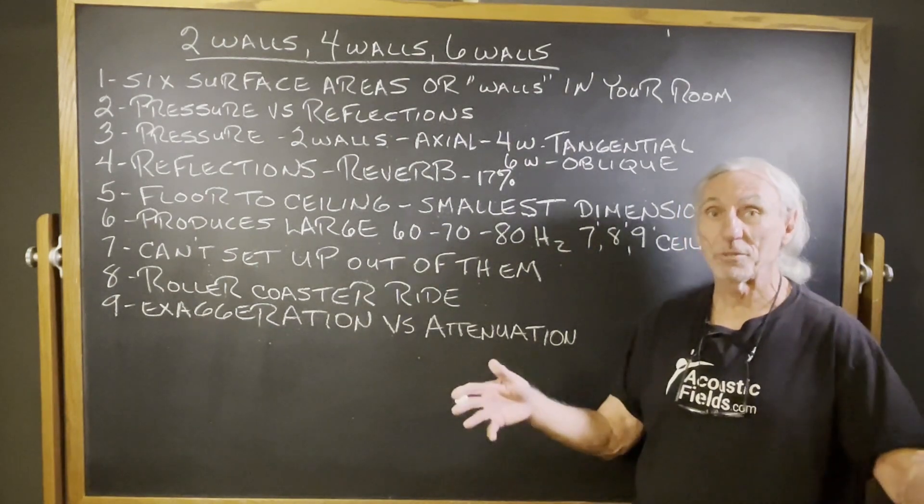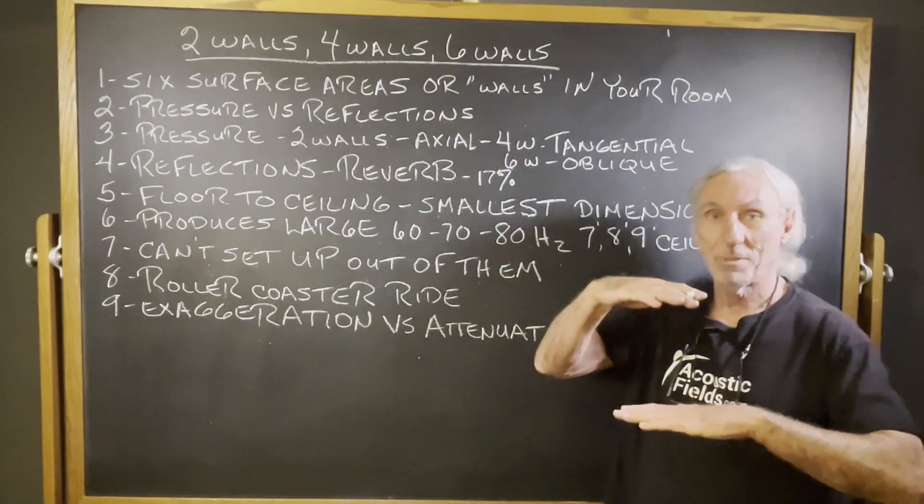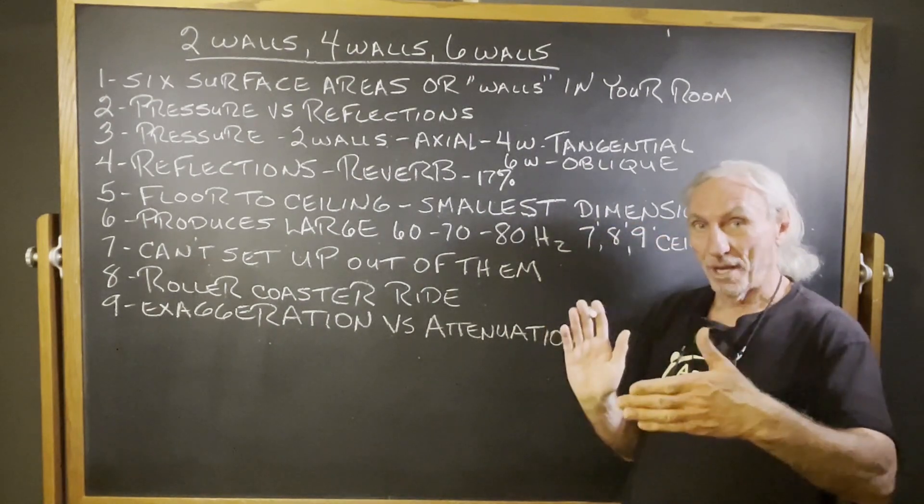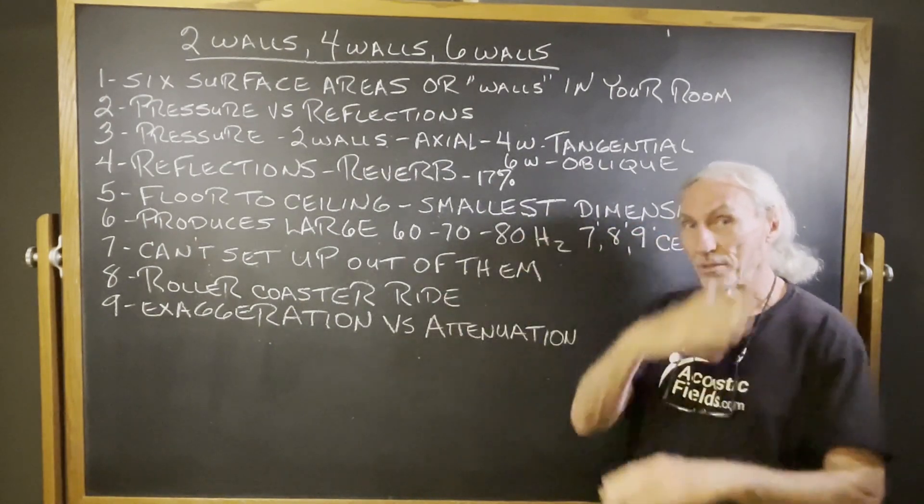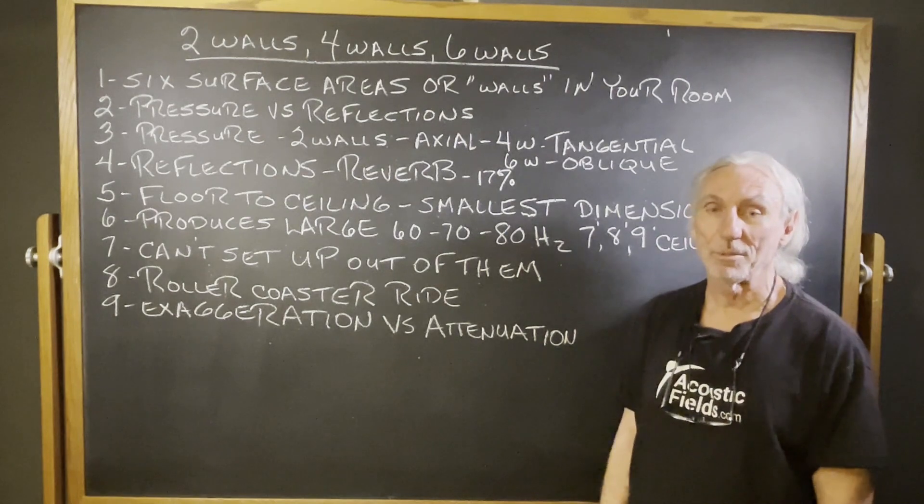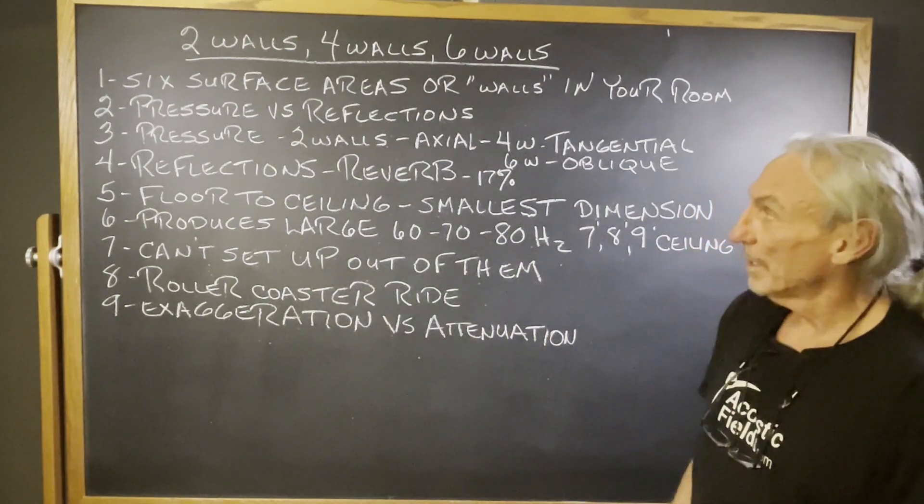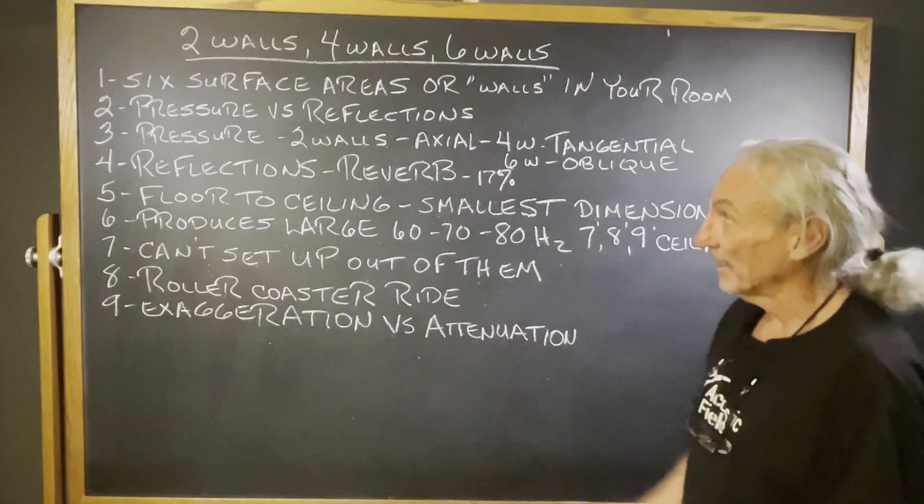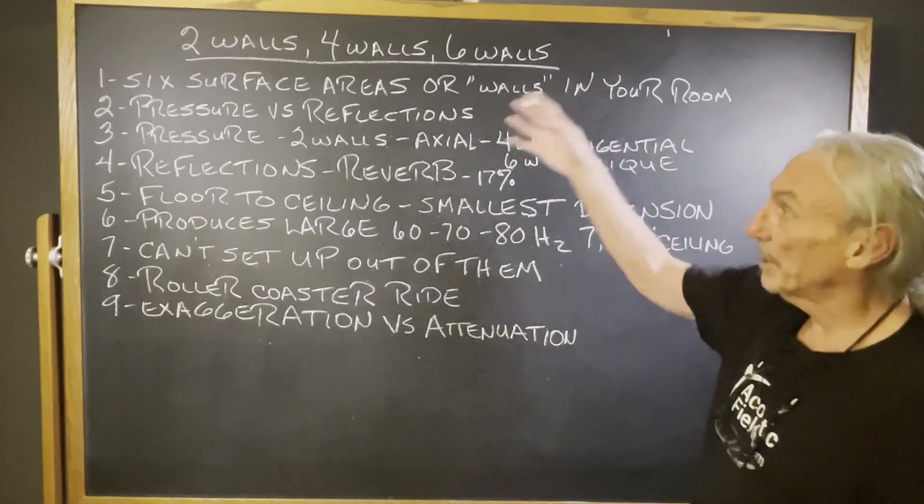Well, we don't call them walls, but they're surface areas. We have six planes in our room: floor, ceiling, sidewall, sidewalls, front to rear. Six planes in our room would be a better way to talk about it, not the kind that fly in the air either. Six surface areas or walls in our room.